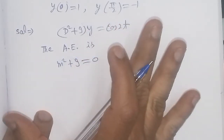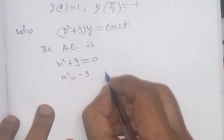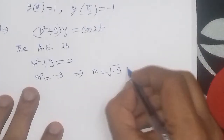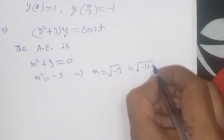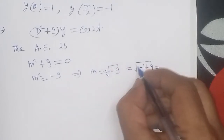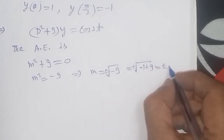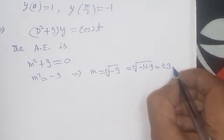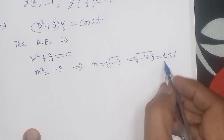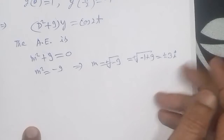From the auxiliary equation m² + 9 = 0, we get m² = -9. Taking the square root, m = ±√(-9) = ±√(9 × (-1)) = ±3i. So m has two values: +3i and -3i. These are pure imaginary roots since the real part is 0.